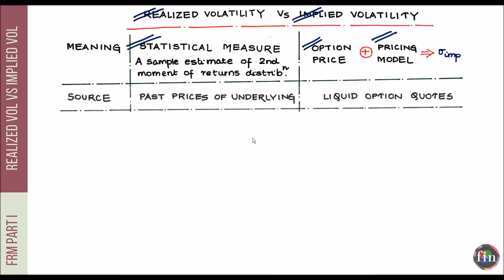Looking at the source of each volatility measure: realized volatility comes from historically observed prices of the underlying asset. Implied volatility, on the other hand, comes from a liquid option pricing quote.